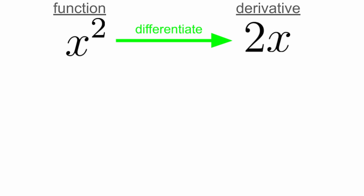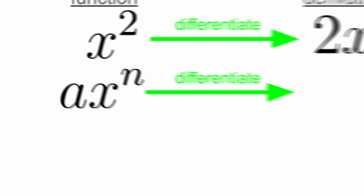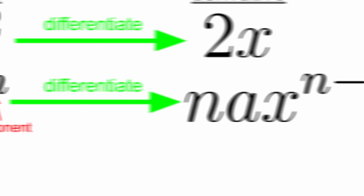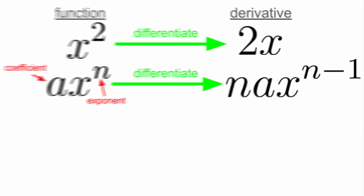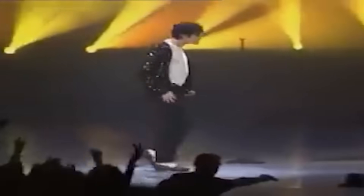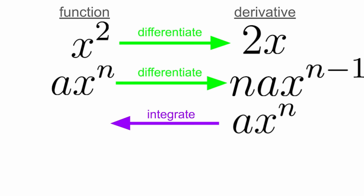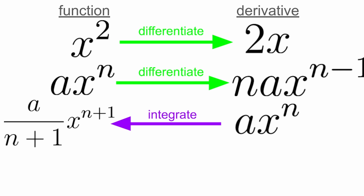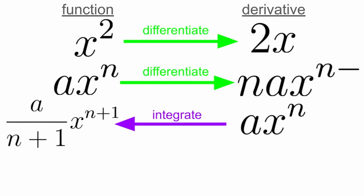At this level, you learn that to find the derivative of a curve, you simply multiply the coefficient by the exponent, and then reduce the exponent by one and repeat this for all terms. And to find the antiderivative, you do the same thing just in reverse — you add one to the exponent and then divide the coefficient by the new exponent.